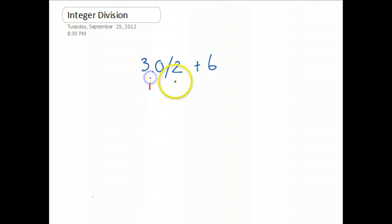So 3.0 is - it's a double because it has the .0. 2 is an integer, and 6 is an integer. So we see that we have a double and an integer. So the result is going to be a double of 1.5.